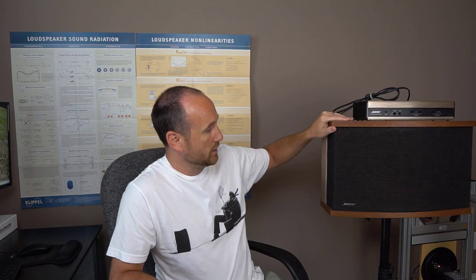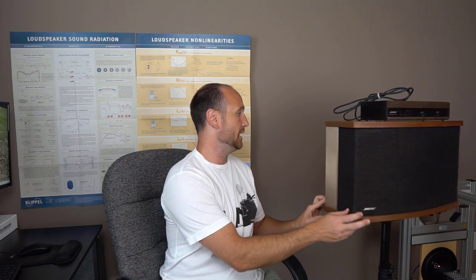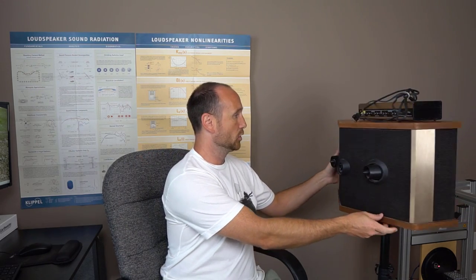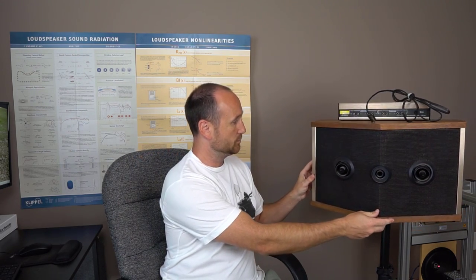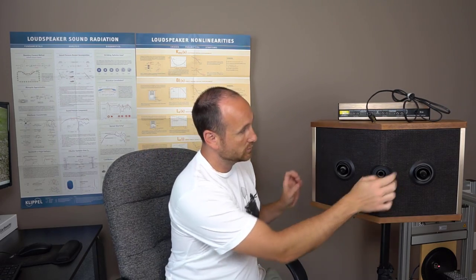Now looking at the speaker, what we have is a whole bunch of grill cloth. Behind this grill cloth on the front is a single 4.5 inch full range speaker and if you spin it around to the back you can see you've got a few ports and behind the grill cloth back here are 1, 2, 3, 4, 5, 6, 7, 8 of the same 4.5 inch full range speaker.